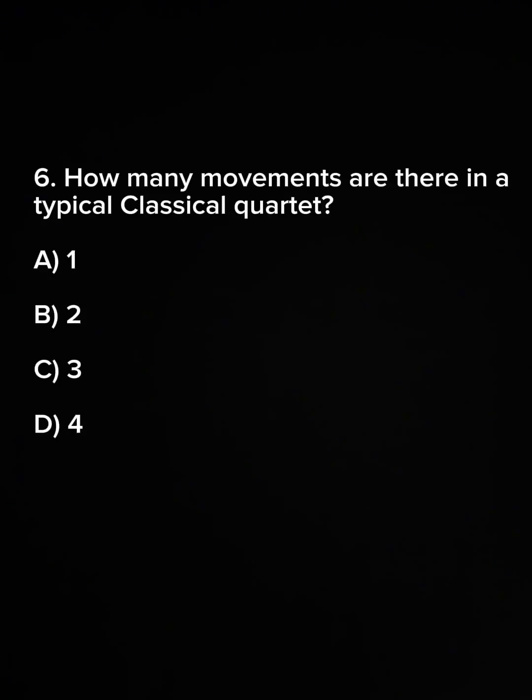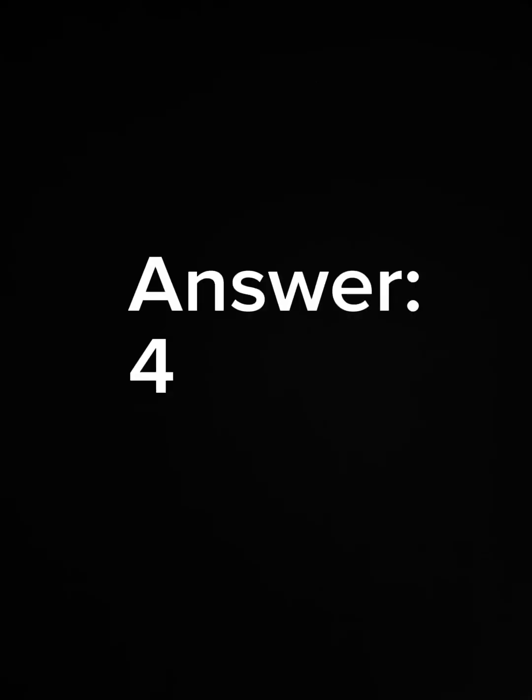Question 6. How many movements are there in a typical classical quartet? A. 1. B. 2. C. 3. D. 4. Answer: 4.